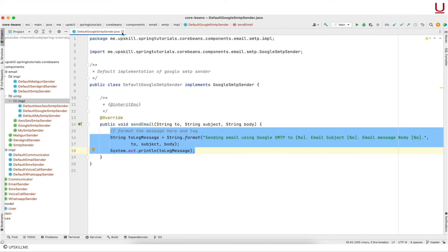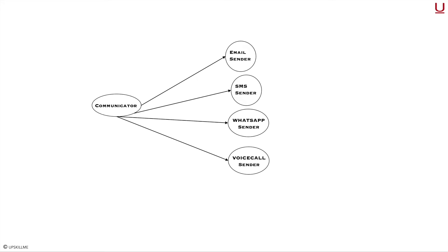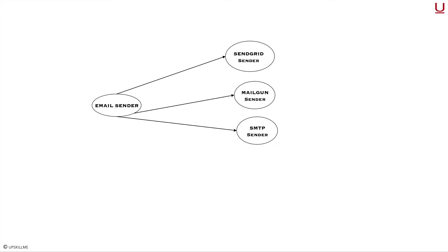Next up let us focus on wiring all these beans together to form a cohesive application. Till now we have a decoupled application where each individual component exists on its own. Let us glue the application together. Quickly diverting to the drawing board to visualize the dependencies: Communicator depends on EmailSender, SmsSender, WhatsappSender, VoiceCallSender. EmailSender depends on SendGridSender, MailgunSender, SmtpSender. SmtpSender depends on GoogleSmtpSender, AwsSesSmtpSender and MySmtpSender. We can use this as a reference when wiring the beans together.